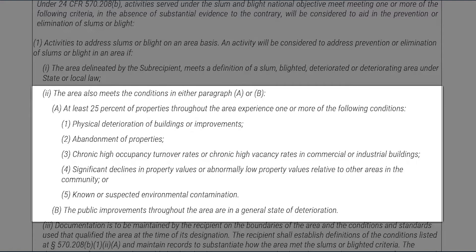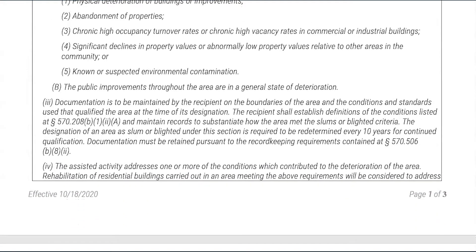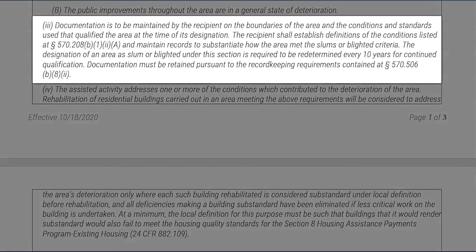Or known or suspected environmental contamination. In addition to Conditions 1 and 2, to meet slum and blight area basis, Condition 3 requires documentation maintained by the subrecipient to justify the determination of the slum and blight area — such as documentation on the boundaries of the area and the conditions and standards used that qualified it. The subrecipient should identify the state or local law that defines a slum, blighted, deteriorated, or deteriorating area and document how the area meets that definition. The designation of an area as slum or blighted is required to be redetermined every 10 years for continued qualification.